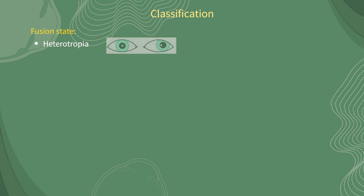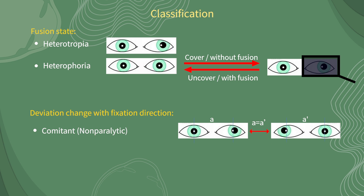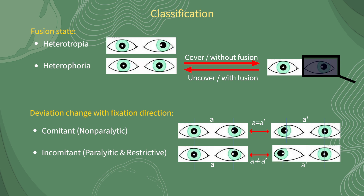Strabismus that is present under binocular viewing conditions is called manifest strabismus, heterotropia, or tropia. A deviation which develops only after binocular vision has been interrupted, for example by occlusion of one eye, is called latent strabismus, heterophoria, or phoria. The most common type of strabismus by far is the concomitant variety, in which the angle of deviation is not significantly influenced by which eye is fixing or the direction of gaze. Cranial nerve palsies and other types of acquired strabismus are usually incomitant, with the magnitude of strabismus being less when the unaffected eye is fixing than when the affected eye is fixing, and varying with the direction of gaze.